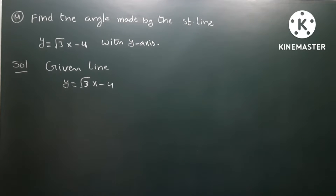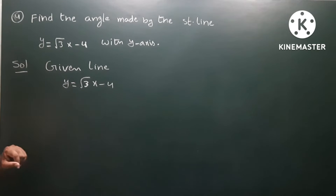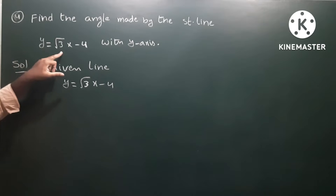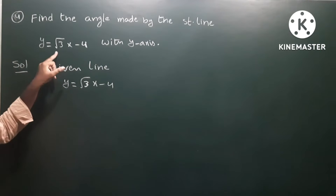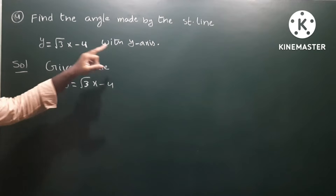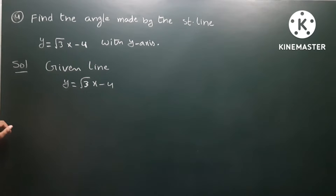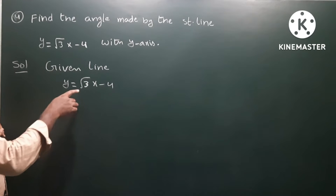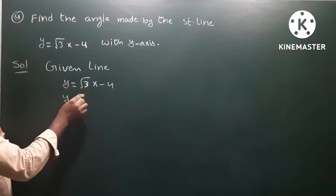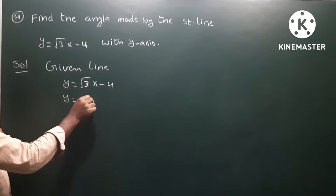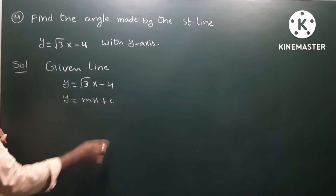Okay, fourth one. Find the angle made by the straight line y = √3x - 4 with the y-axis. What angle does it make with the y-axis? So first of all, write the given straight line and compare this with slope-intercept form y = mx + c.